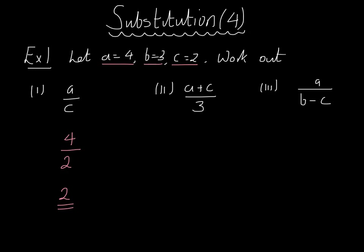A plus C over 3, or A plus C all divided by 3. A is 4, so we do 4 plus C which is 2, so 4 plus 2 divided by 3. 4 plus 2 is 6, so that's 6 divided by 3 and 6 divided by 3 is 2 again.